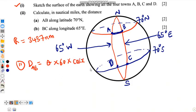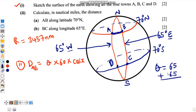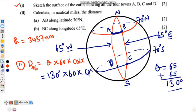Here θ is the difference in longitudes between A and B. Point A is on 65 degrees west and point B is on 65 degrees east — they are in different hemispheres, so we add: 65 + 65 = 130 degrees. So θ = 130 degrees. We substitute: 130 × 60 × cos(x).